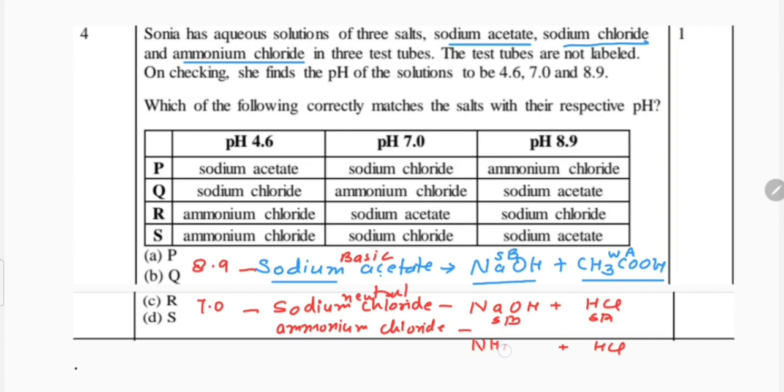This is a weak base and this is a strong acid. If acid is strong, the salt will be acidic in nature, means its pH will be like 4.6.